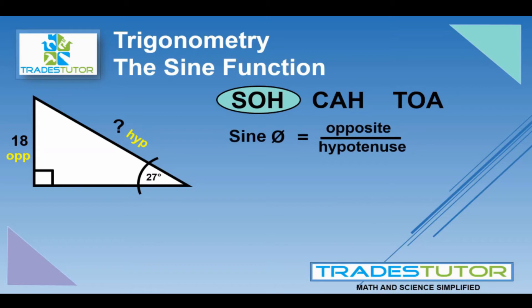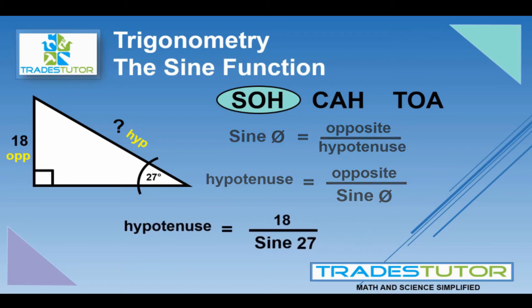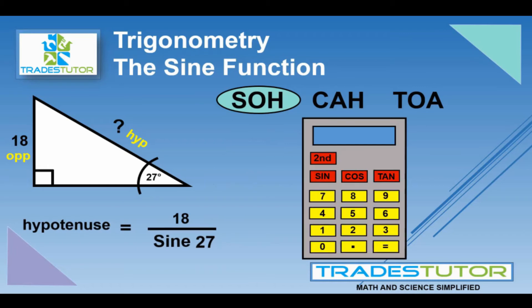But now we're not trying to find the angle. We already know that. We've got to rearrange the formula to solve for the hypotenuse. That works out to be the opposite over sine. So, the hypotenuse equals 18 divided by sine 27. We can't work with sine 27 as it is. We have to change that into a number. Sine 27 will give us a relationship number between the opposite and the hypotenuse. Once again, we'll bring in our calculator.